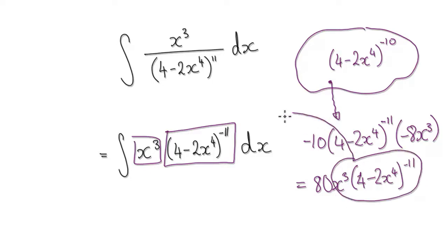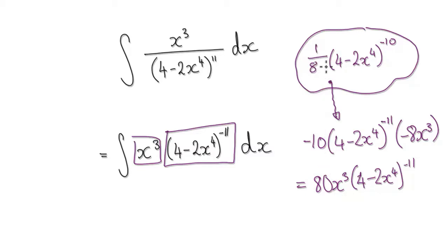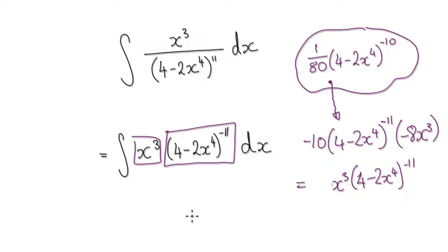Notice that this thing here is exactly the same as this thing here. We just don't want this 80, so we need to negate it. To negate this 80, go back to your initial guess and stick 1 over 80 in here. So now when you differentiate this, the 80 disappears, giving you what we were seeking all along. So the answer to this is this, plus c.